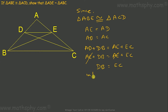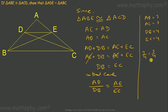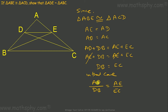Now I have AD equals AE and DB equals EC. In that case, AD over DB will be equal to AE over EC. For example, if AD is 3 then AE is also 3. If DB is 4 then EC is also 4, so AD over DB equals 3 over 4 and AE over EC also equals 3 over 4.